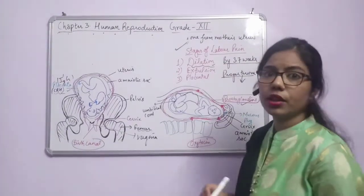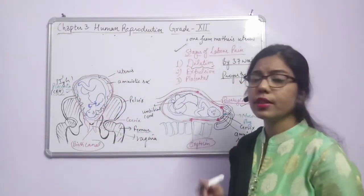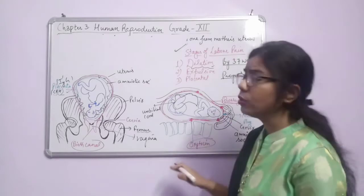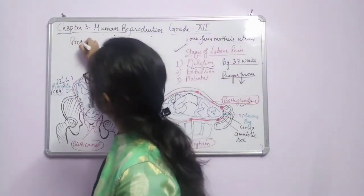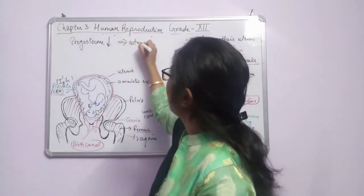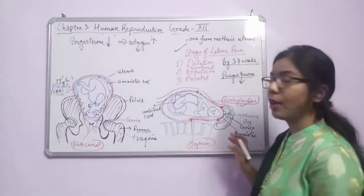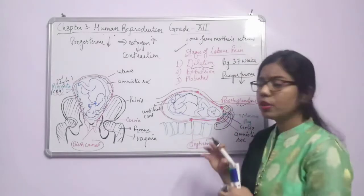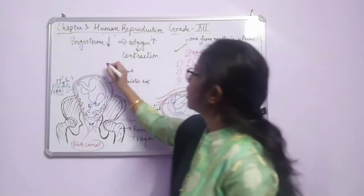The first stage of labor is dilation — dilation of the cervix. By the 37th week, the progesterone level decreases and estrogen increases. Increased estrogen causes uterine contraction. Due to this contraction, prostaglandin hormone is released by the membrane, which applies further pressure to help the baby come outward.